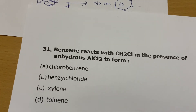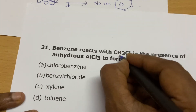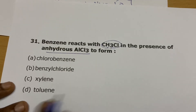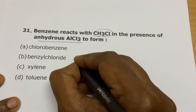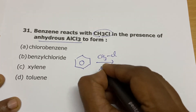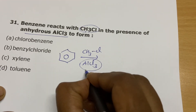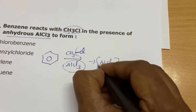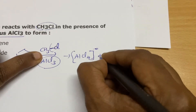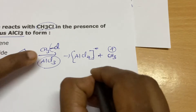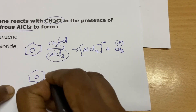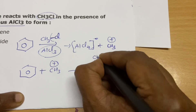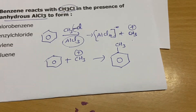Benzene reacts with methyl chloride in the presence of anhydrous AlCl3 — this is a Friedel-Crafts alkylation reaction. AlCl3 is a Lewis acid that grabs chlorine from CH3Cl to form AlCl4 minus, leaving behind CH3 plus as the electrophile. This electrophile reacts with benzene in an electrophilic substitution reaction. The product formed is toluene.